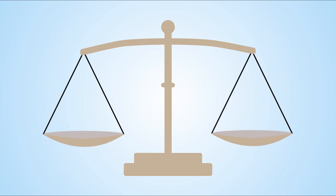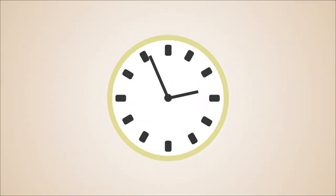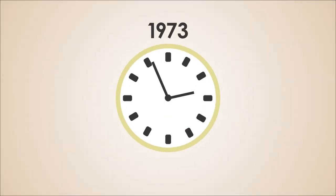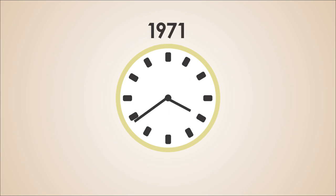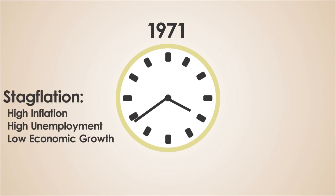The eventual collapse of the Bretton Woods system was foreshadowed shortly after its inception, as demand for the dollar would increase more than the value of the gold it was backed by. The Bretton Woods system was finally abandoned in 1973. In the years prior to 1973, the United States was suffering from the economic nightmare known as stagflation, which is a period in which inflation is combined with a recession.